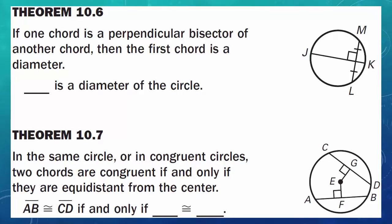Theorem 10.6: if one chord is a perpendicular bisector of another chord, then the first chord is a diameter. In our picture over here, since chord JK bisects line ML and creates that perpendicular, then we can say that line segment JK is a diameter of the circle. Theorem 10.7: in the same circle or in congruent circles, two chords are congruent if and only if they are equidistant from the center. So line segment AB is congruent to line segment CD if and only if line segment EF is congruent to line segment EG. Notice that line segments EG and EF are radii as they start from the center of the circle.